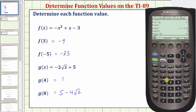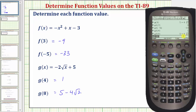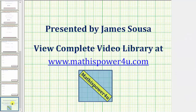So y two in parentheses four, enter, confirms the function value g of four. And finally, g of eight would be y two of eight, enter, which we know is five minus four square root two. So either of these two methods can be used to determine function values on the TI-89 graphing calculator. I hope you found this helpful.